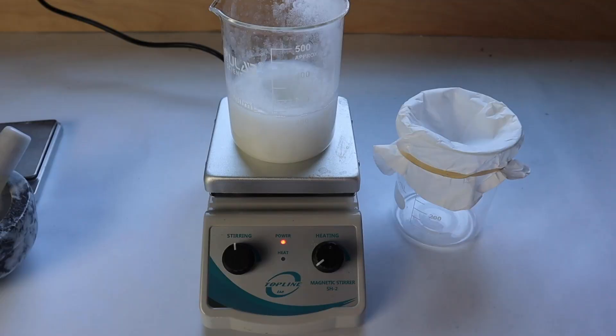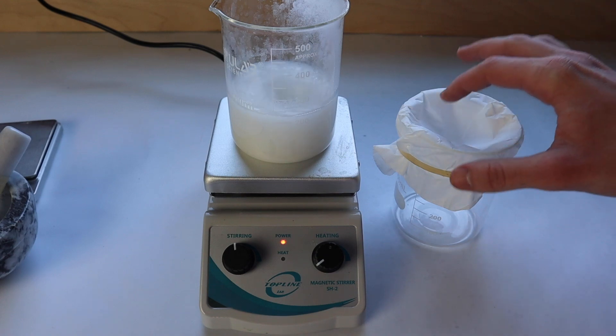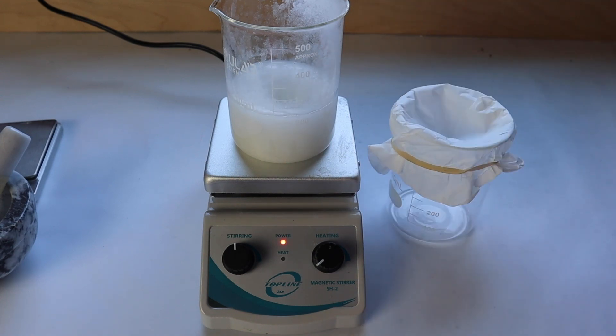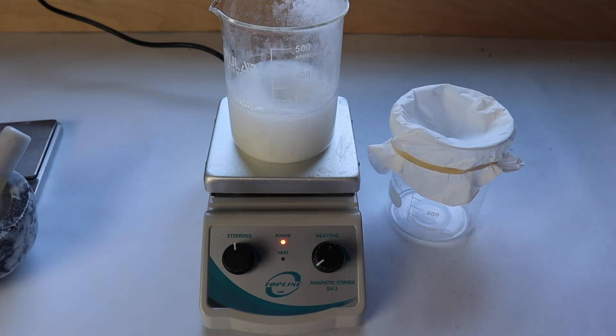Now we stir. It has been stirring for about 10 minutes. What I'm going to do now is try and filter off the stuff that didn't dissolve with this coffee filter around the beaker. If you have a vacuum filter this will be a lot easier.